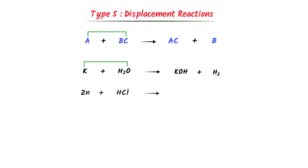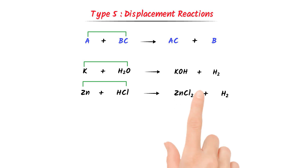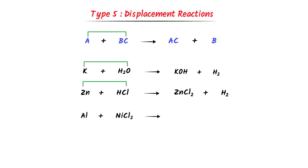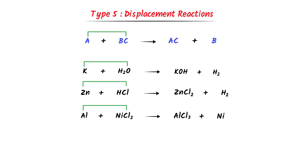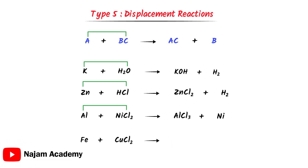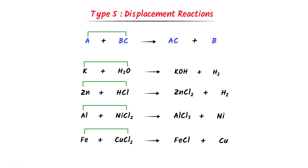Secondly, consider zinc plus HCl. Zinc is electropositive and chlorine is electronegative, so zinc reacts with chlorine and we get zinc chloride plus hydrogen gas. Thirdly, consider aluminium plus nickel chloride — aluminium will displace nickel by reacting with chlorine, and we get aluminium chloride plus nickel. Fourthly, consider iron plus copper chloride — iron is the positive species, chlorine is the negative species, so iron reacts with chlorine and displaces copper.